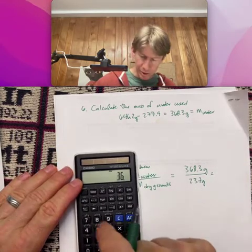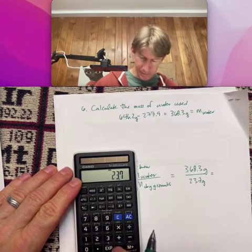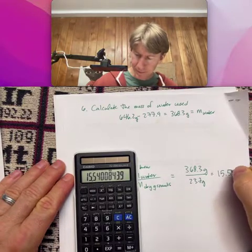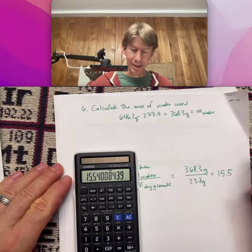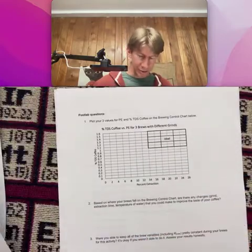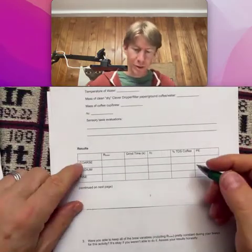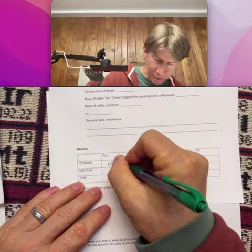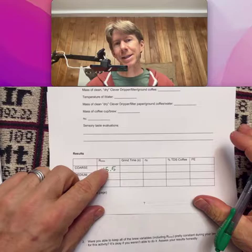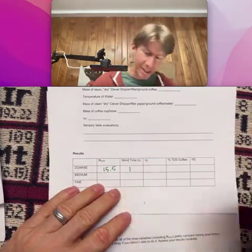And remember I was shooting for 15 and I hit 15.5, so not too bad. Now what we can do is fill in this table for our coarse coffee. Now that I've got my 15.5, that was my brew ratio, and we're going to keep track of this just to see that it's about constant. Our grind time was one second.